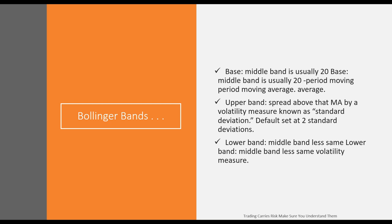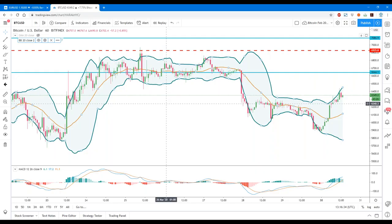Bollinger Bands uses the middle band — a 20-period moving average — the upper band set to plus two standard deviations, and the lower band set to minus two standard deviations. We're finished with the math, so let's go back to a chart.